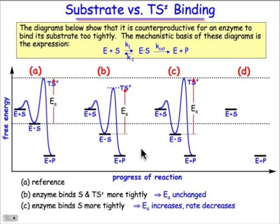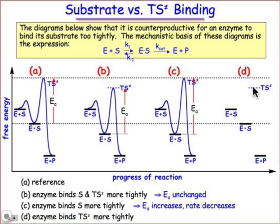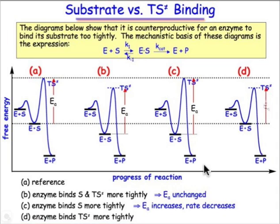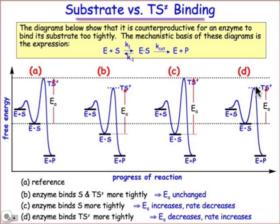Finally, in case D, what we have is selective binding along the reaction pathway of the transition state leading to the turnover event. We're going to keep the energy of the enzyme-substrate complex fixed at the reference point value. In this case, we've lowered the activation energy, so the rate of the reaction is going to increase. The main point is that the enzyme needs to selectively bind the transition state structure for the turnover event, leaving the energy of the enzyme-substrate complex unchanged.